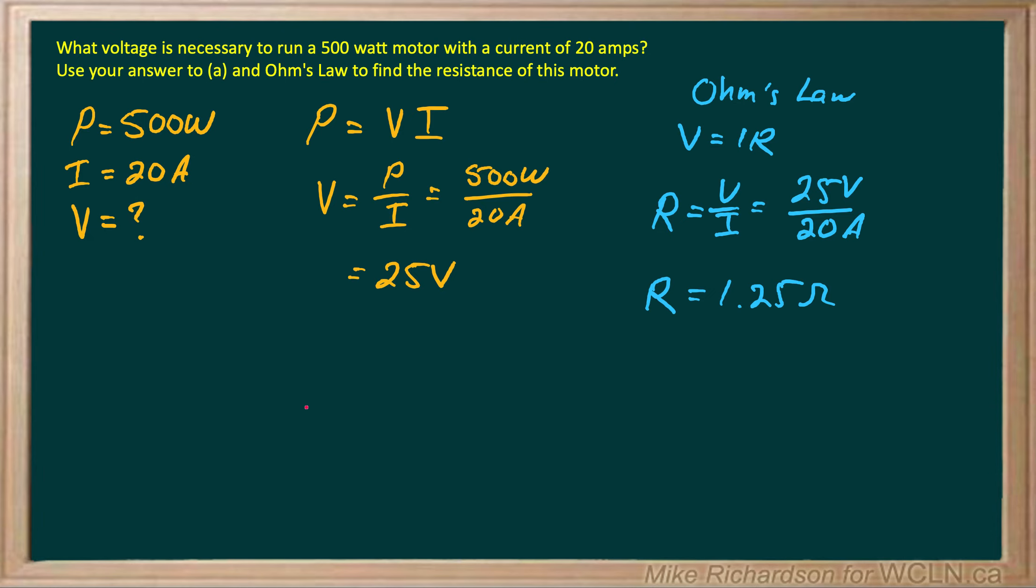Just as a note, if the only question was the second part, find the resistance of this motor, you could have simply used this equation all in one shot. Power is I squared times R. We know the power, we know the current, and we just have to solve it for R.